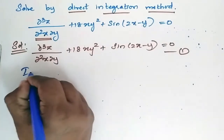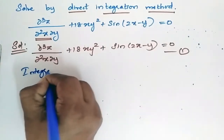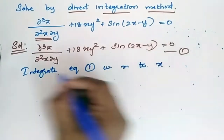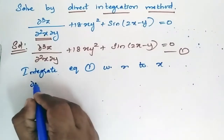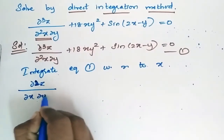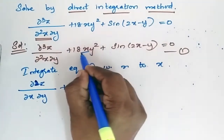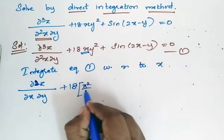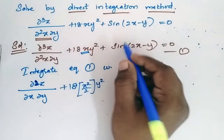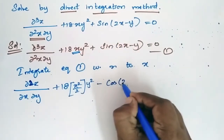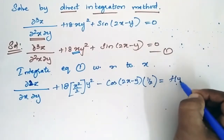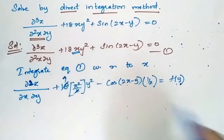Now integrate equation 1 with respect to x. When integrating with respect to x, I will get ∂²z/∂x∂y + 18 · (x²/2) · y², and for the sin term I will get minus cos(2x - y) · (1/2), equal to some f₁. I can simplify to get 9 here.